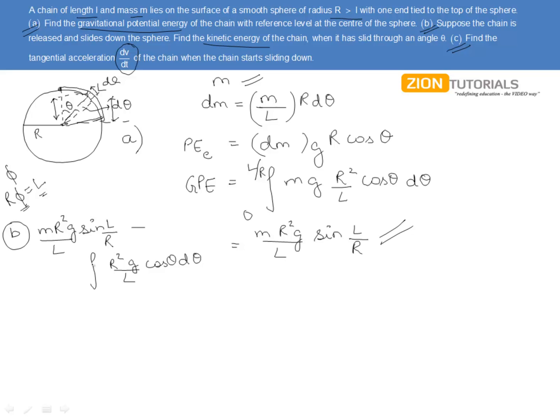Now, this will be from theta, because it has slipped from angle theta, so one of the end will be here at theta, so the limits will be theta to L by R. Solving it, it gives M R square G by L sine L by R plus sine theta minus sine theta plus L by R.